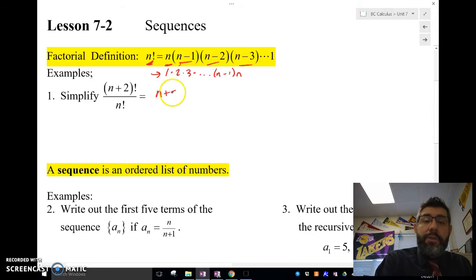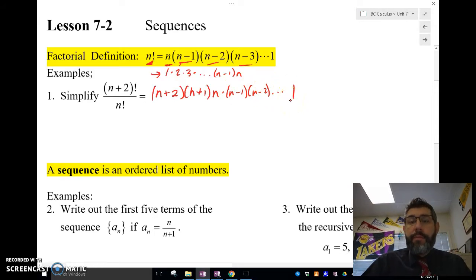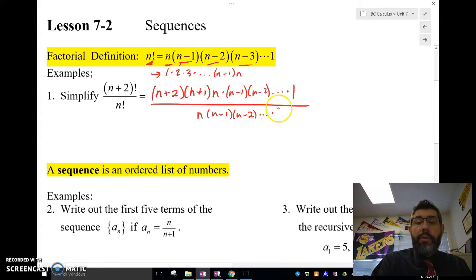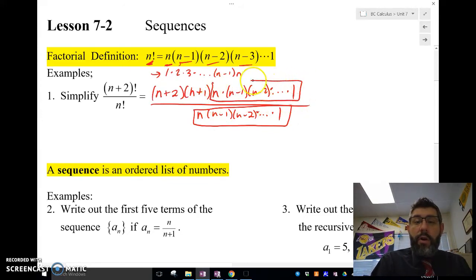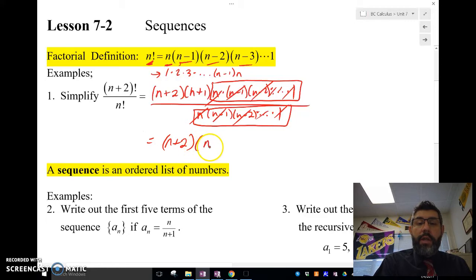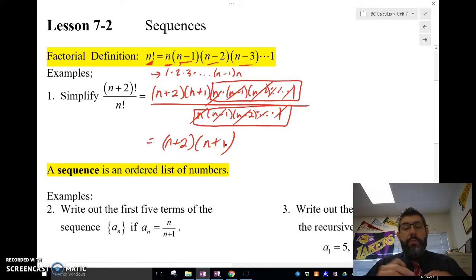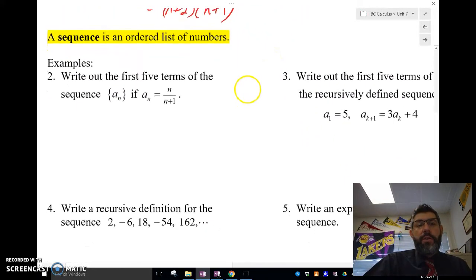So (n+2)! is going to be (n+2) times (n+1) times n times (n-1), and then we're just going to keep going down there on and on until we get to 1. n! is n times (n-1) times (n-2) times dot dot dot all the way until we get to 1. Notice here that all of this is the same as all of this. So the n's go away, the (n-1)'s go away, the (n-2) goes away, all the way out to those ones. That whole thing goes away and we're left with (n+2) times (n+1). The factorials can be simplified if you just expand those factorials out, and you'll see where we get to use those later on with sequences.